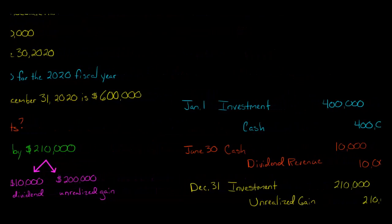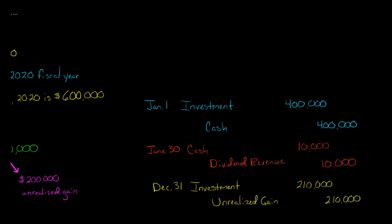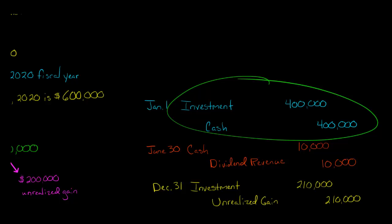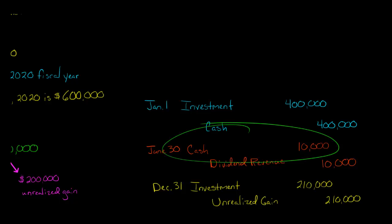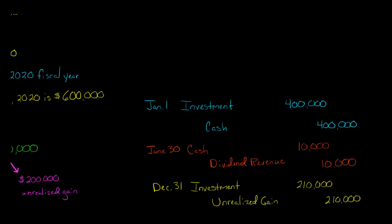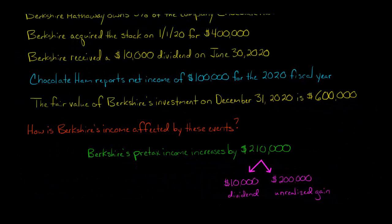Here are the journal entries for Berkshire Hathaway under the fair value method. When they purchase the stock in Chocolate Ham, debit the investment account and credit cash. When they receive dividends, debit cash and credit dividend revenue. Then they mark the investment to market on December 31st: the investment increased in value by $200,000 — from $400,000 to $600,000 — so debit the investment account $200,000 and credit unrealized gain $200,000.